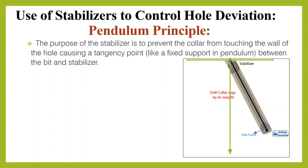In the BHA design, we place a stabilizer at a specific location — it acts like a fixed support in a pendulum. The active length, from the stabilizer to the drill bit, will behave like a pendulum. The purpose of the stabilizer is to prevent the drill collar from touching the wall of the hole, creating a tangency point. This stabilizer acts as the tangency point, or fixed support, and the section below it behaves like a pendulum.